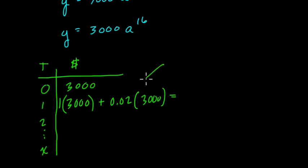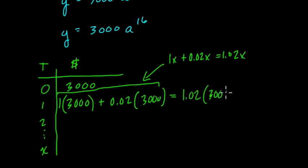So just like if we think of 3,000 as x, then this could be thought of as 1x plus 0.02x. And from lots of experience in algebra, you know you could just add the coefficients here. So this equals 1.02x. So here, that means it equals 1.02 times 3,000.